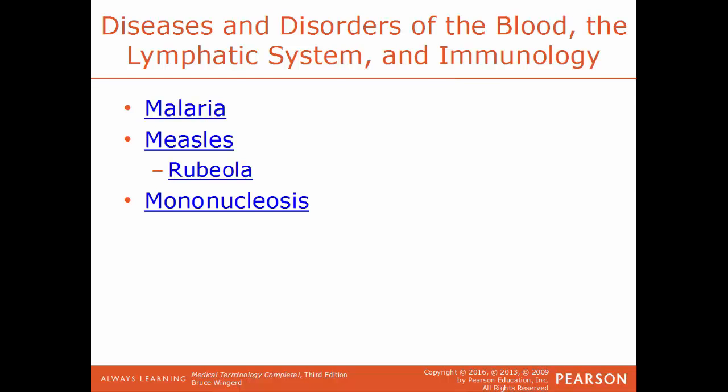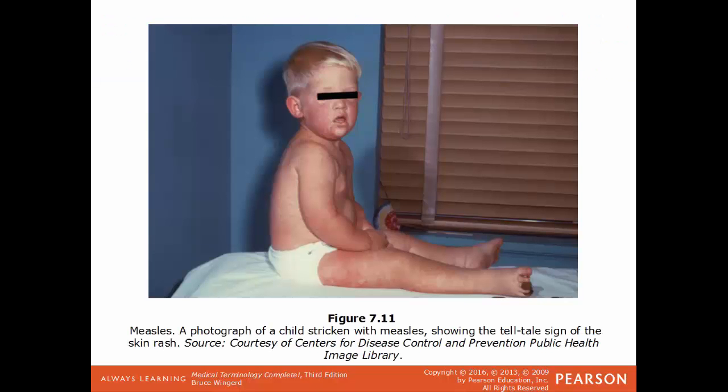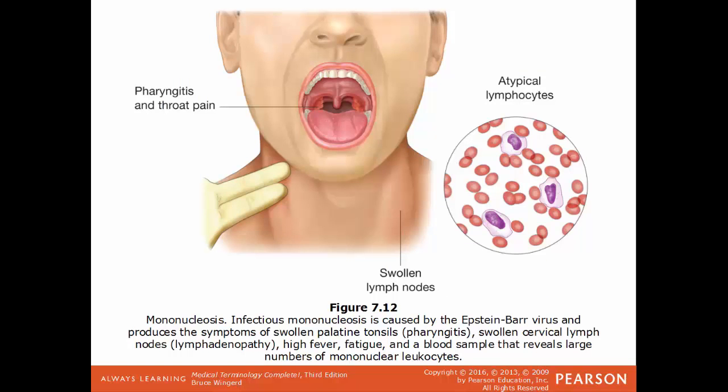Thanks to increased vaccinations, measles is nowhere near as common as it used to be. Mononucleosis, commonly known as the kissing disease, is a viral disease where the virus is passed through saliva. There is an abnormally high proportion of monocytes — a type of white blood cell — in the blood. An image shows a child with measles and the characteristic reddish skin rash. Mononucleosis is caused by the Epstein-Barr virus, leading to fatigue, high fever, and swollen tonsils. The blood smear shows an abnormally high number of monocytes.